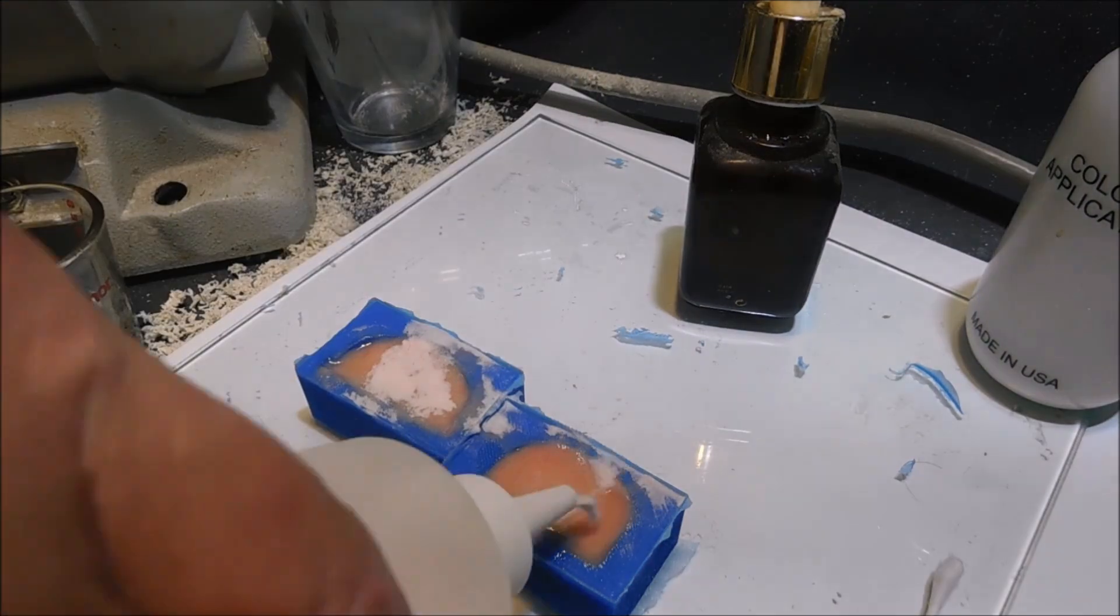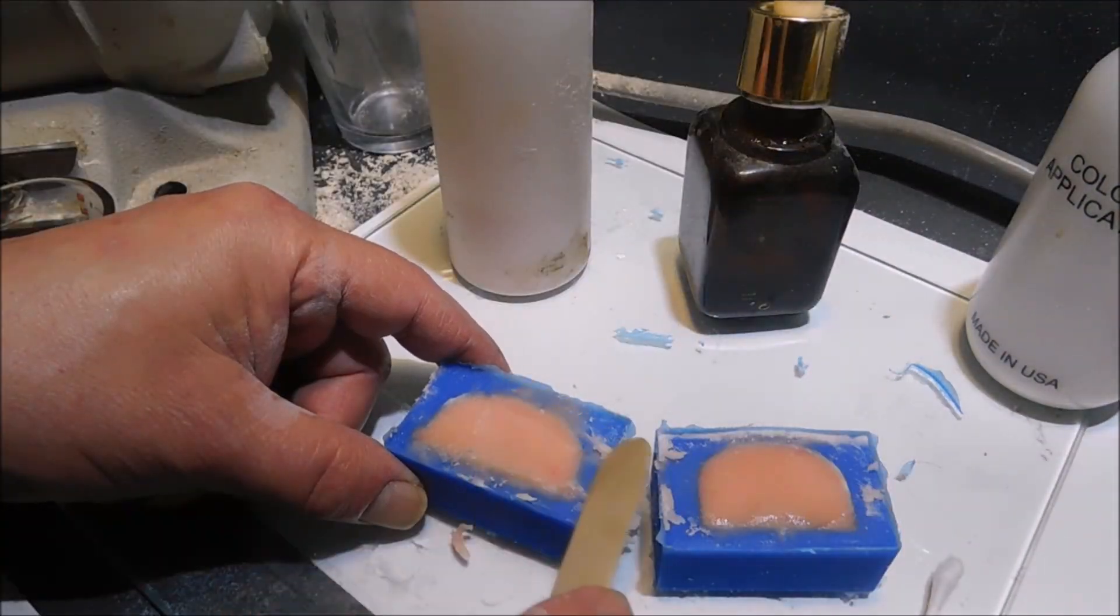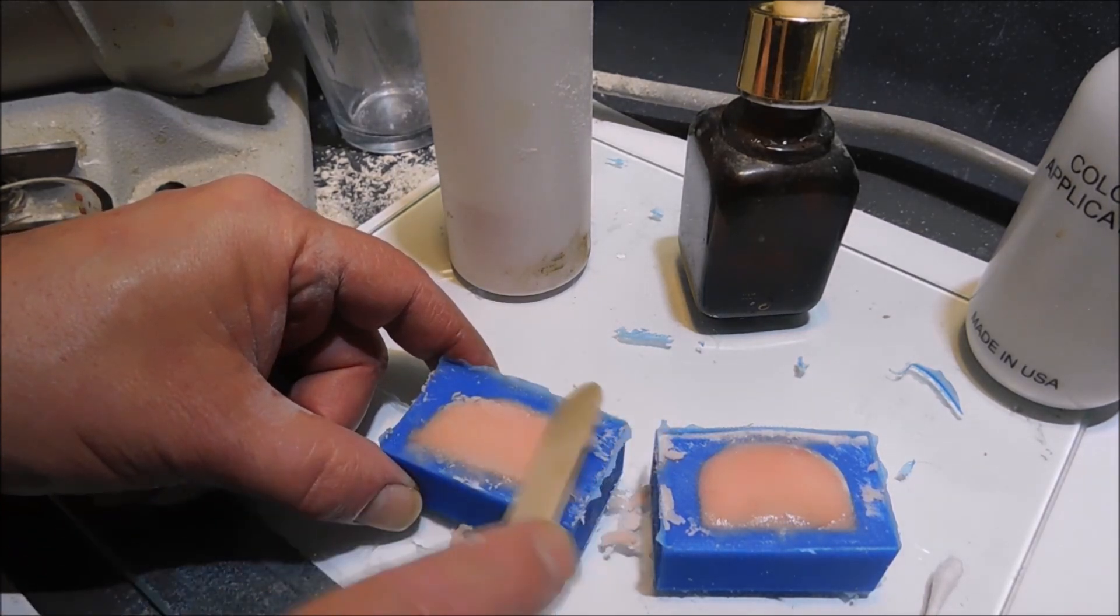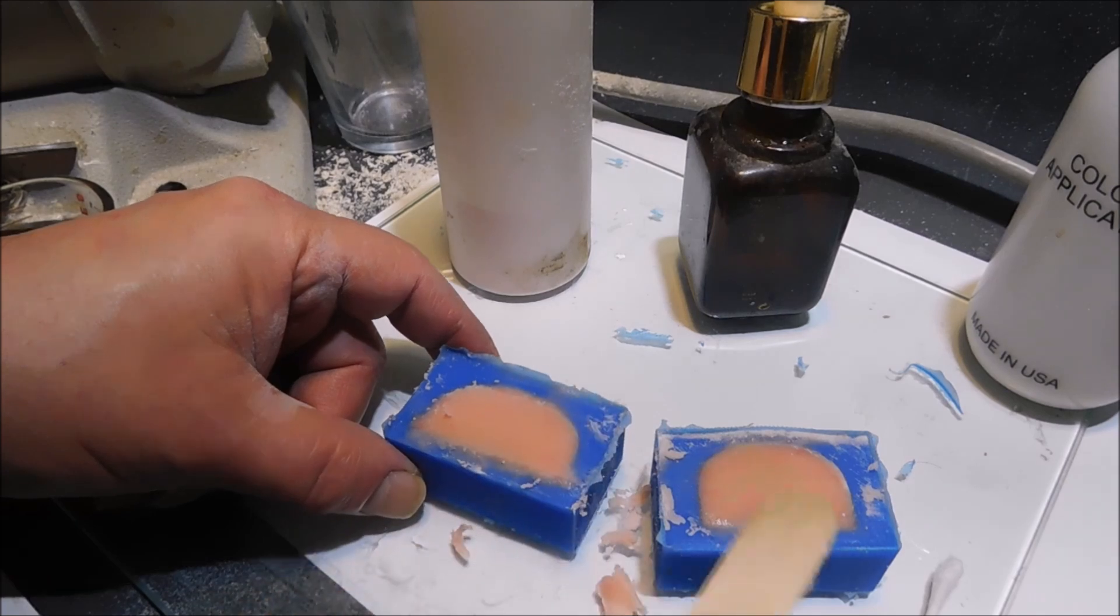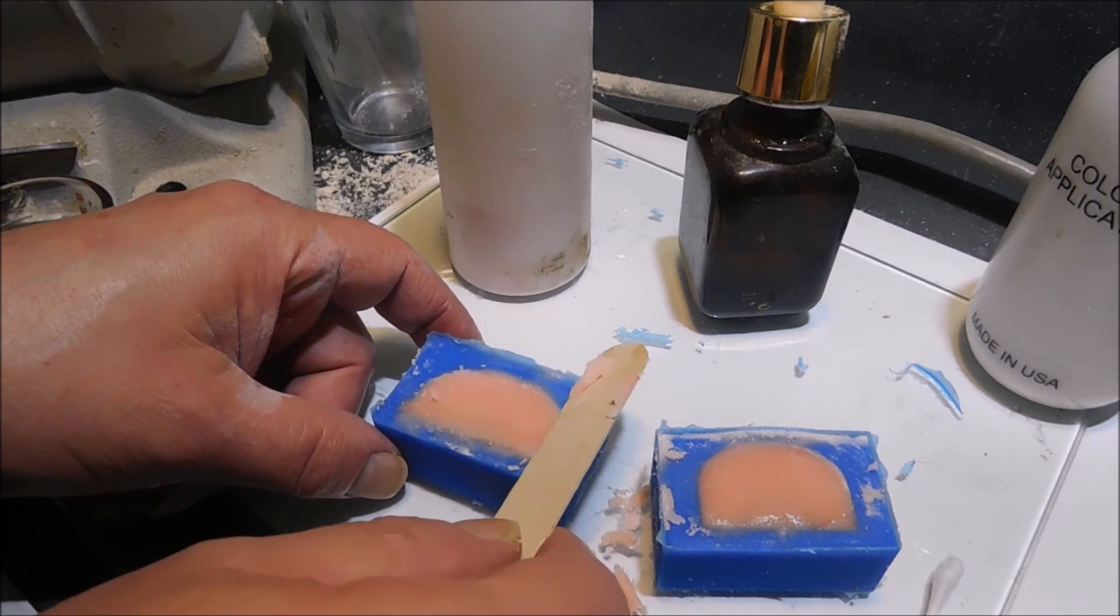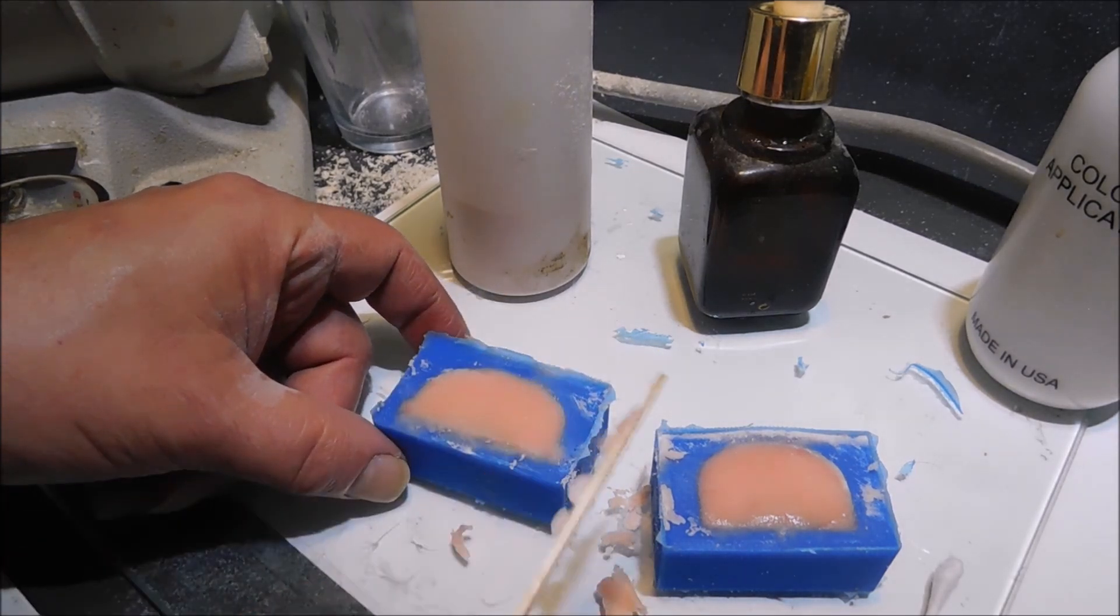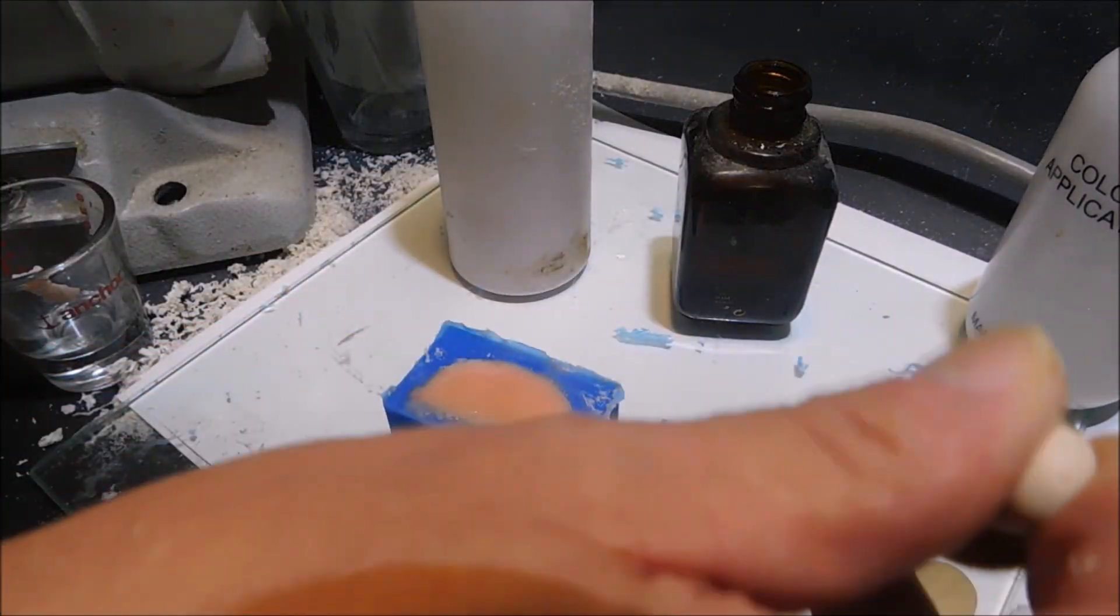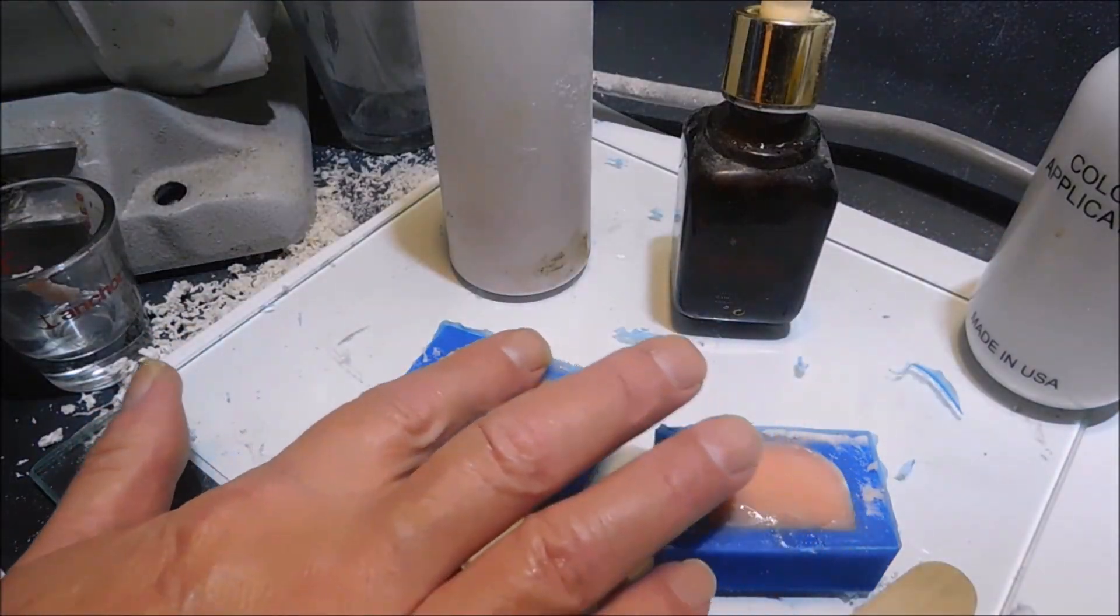All dental acrylic needs to go into a pressure pot, and this prevents porosity, which is air bubbles. You submerge them completely in the water. With this type of acrylic, there's other acrylics like a pour acrylic that's kind of wet, but mainly it's trying to avoid air bubbles.